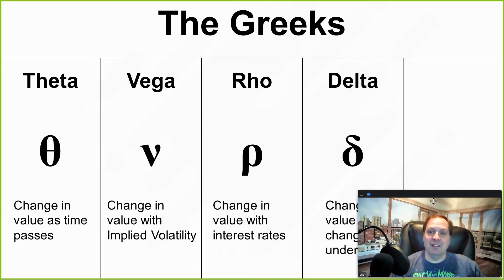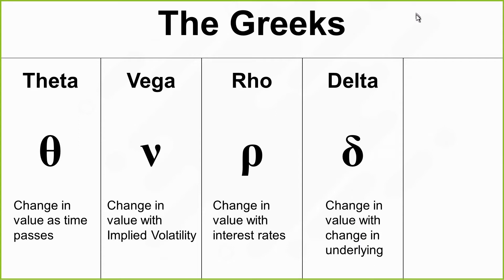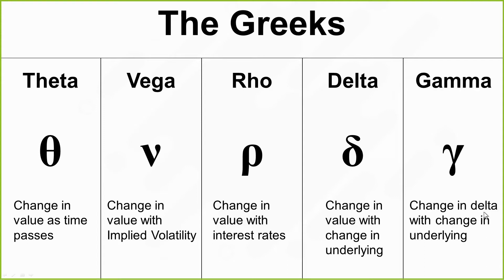The next one is delta, and this is the big one you care about. It's the change in value with respect to the change in the underlying. So if the stock moves up by a dollar, how much does the option value move up? It's usually not by a dollar — it's some fraction of that. And then there's gamma, which is the change in delta with respect to the underlying — the first derivative of delta. We're going to focus now on delta so you can see how it applies to probabilities.